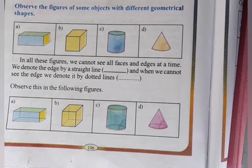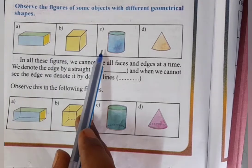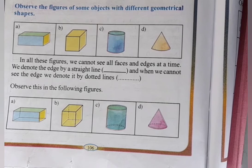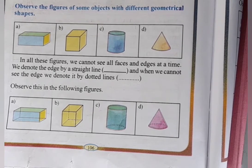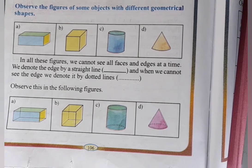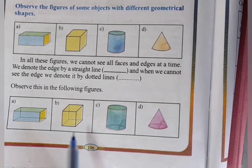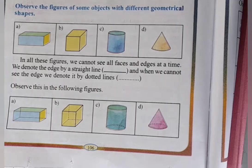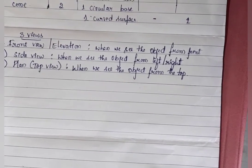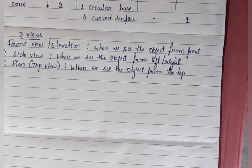Observe the figures of some objects with different geometrical shapes A, B, C, D. In all these figures we cannot see all faces and edges at a time. We denote the visible edges by a straight line, and when we cannot see the edges we denote them by dotted lines. So dear students, in this class we learnt about three-dimensional figures, their properties, and their views.